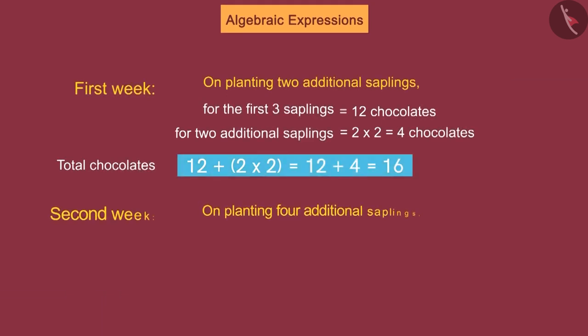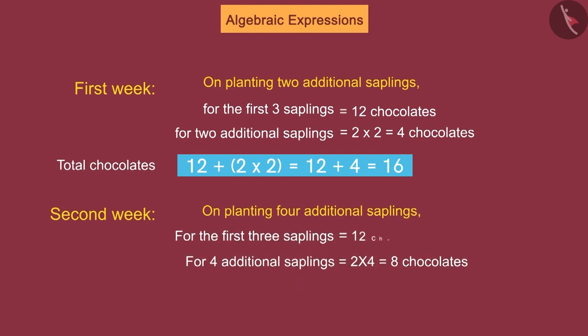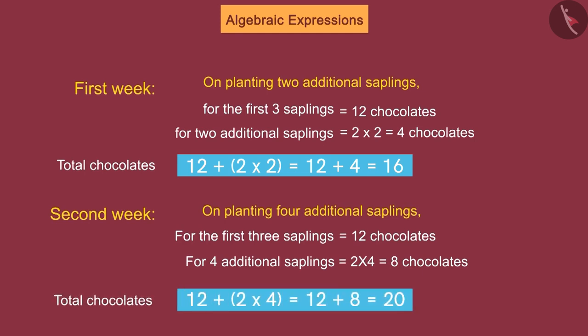Similarly, what if Raghu plants four additional saplings next week? For the first three saplings, he will get twelve chocolates, and for the additional four saplings, he will get two chocolates per sapling. This way, Raghu will get a total of twenty chocolates.